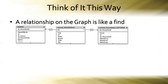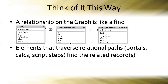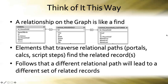If you think of a relationship as a find that persists, a lot of things start to make easier sense. Elements that traverse those relational paths — things like portals, calculation functions, and certain script steps — are going to find those related records. Taking a different relational path will lead you to a different set of related records. That's a strong argument for why we need a graph management strategy.